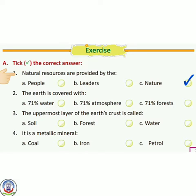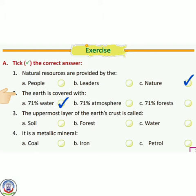Number 2 — the earth is covered with... Earth किससे covered है? Options: 71% water, 71% atmosphere, 71% forest. The correct answer is A, 71% water. Earth 71% water से covered है।